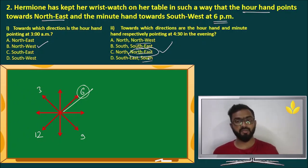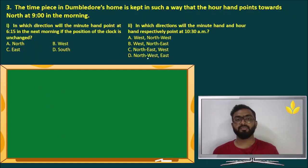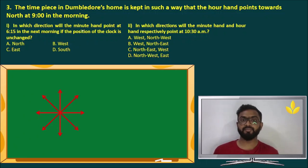Now, the next question is very much similar to this. The timepiece in Dumbledore's home is kept in such a way that the hour hand points towards north at 9 in the morning. Again, we draw the same diagram. Now, at 9, the hour hand points towards north. So this is 9. Exact opposite to 9 is 3. Now, since we are working clockwise, so 3, 6, 9 and 12. This is the watch.